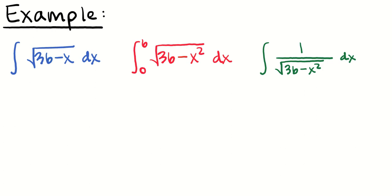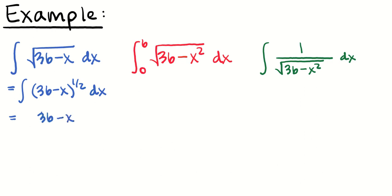Now here are three more integrals that look similar but are different in some ways. Two are ones we already know how to do, and one will be a complete-the-square type. For the first one — √(36 − x) — that's the same as (36 − x)^(1/2). I can anti-differentiate that: add one to the power, divide by the new power. I'll make it negative two-thirds so that when the negative comes up from the chain rule, it makes positive one times (36 − x)^(1/2).